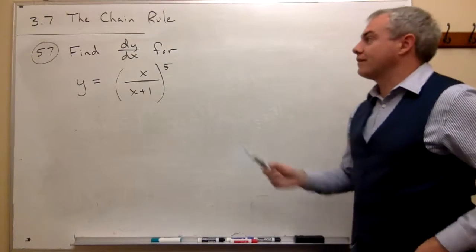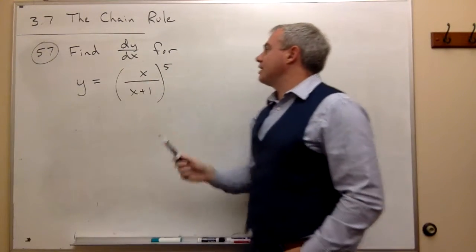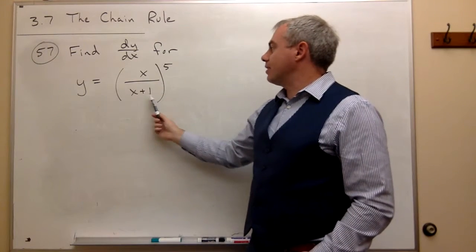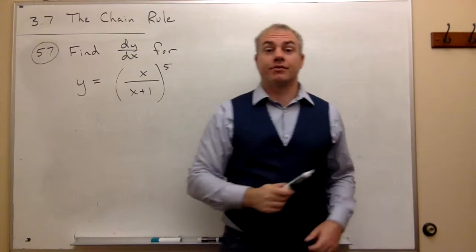In problem number 57, we want to find dy/dx for y equals x over x plus 1 raised to the fifth power.